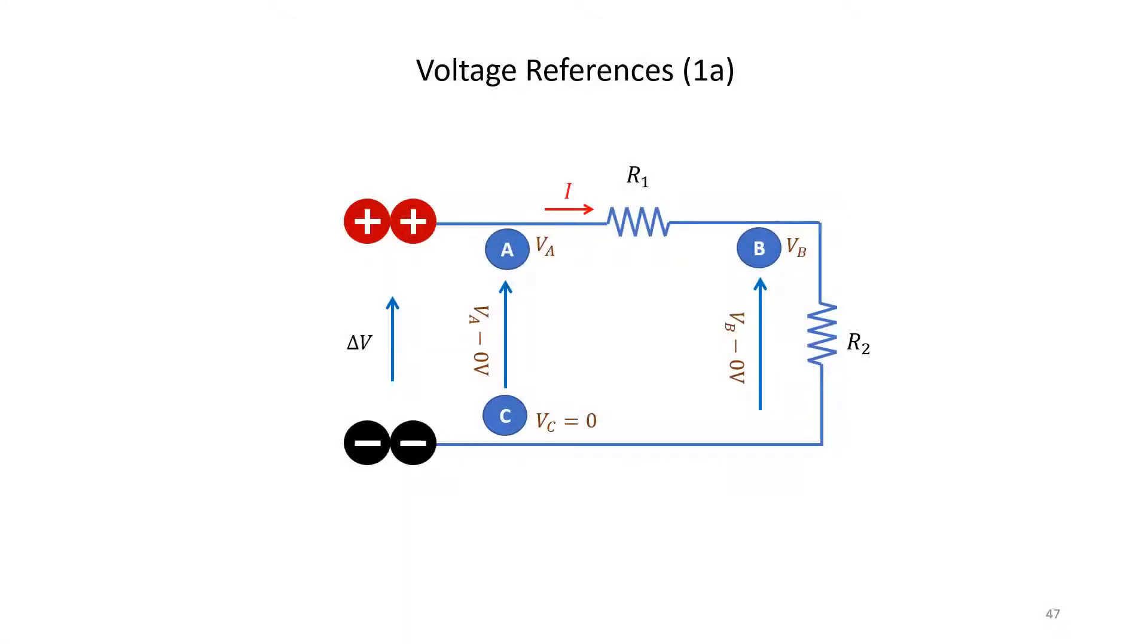Although we want to look at the voltage drop across a specific element to see how much potential energy the charges lose as they go through the particular element, we may also want to look at the voltage difference between every point in the circuit and the same reference point. In this case we are looking at VA minus VC, VB minus VC, so all the points in our circuit will have a voltage level which is the difference between the voltage at that point and the voltage at the reference point.